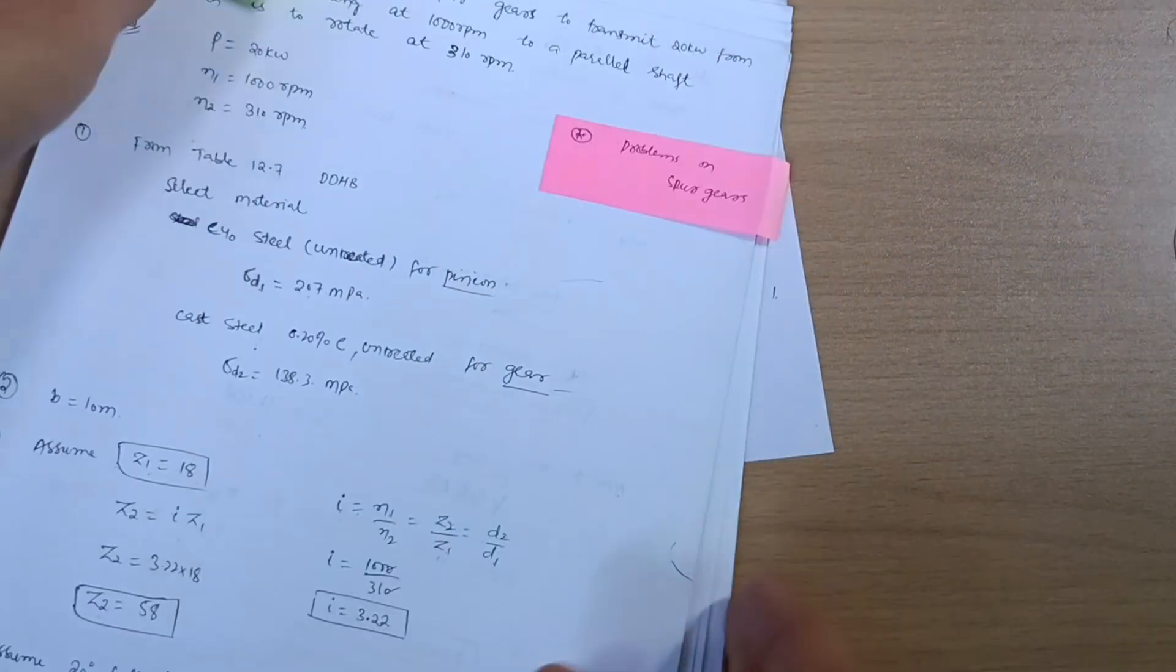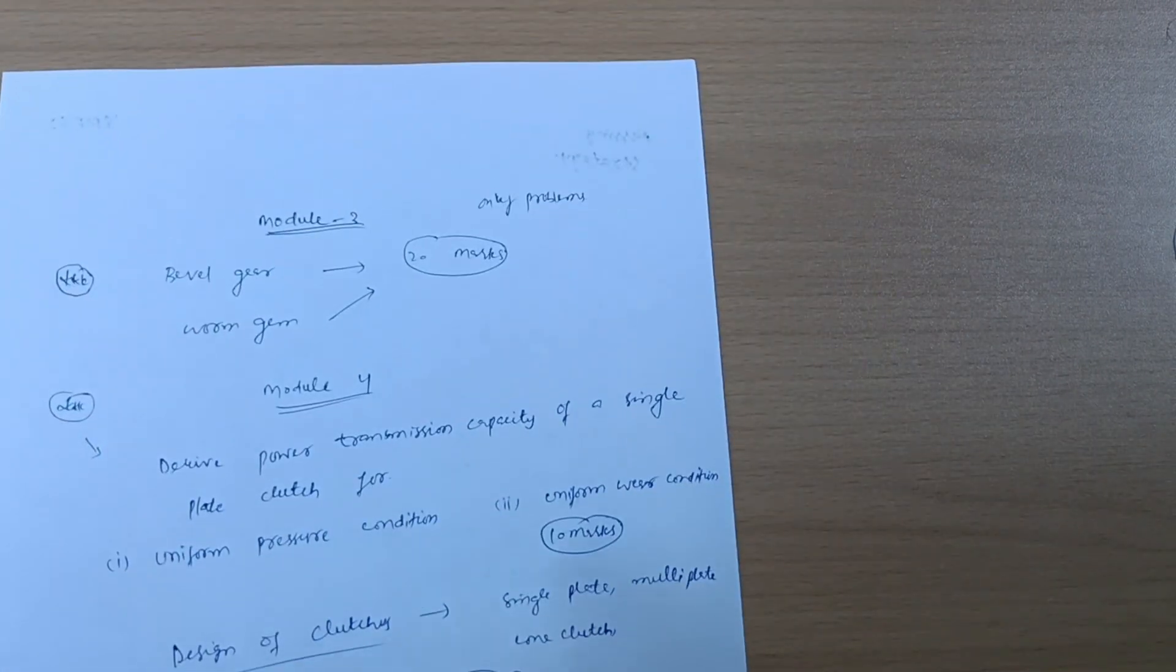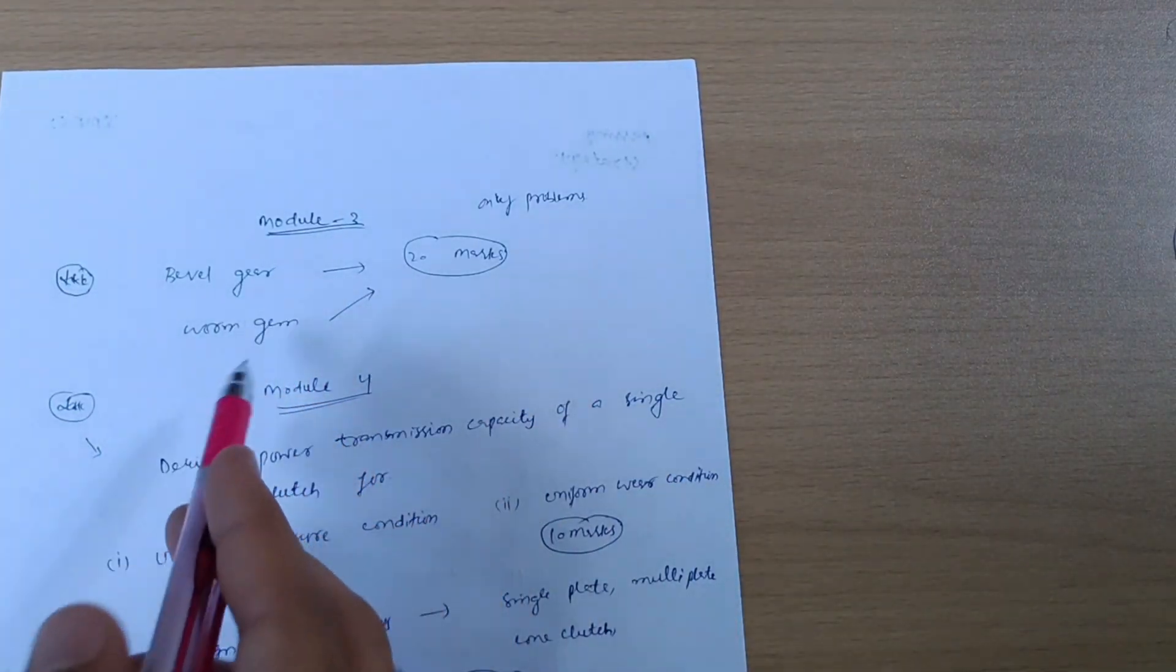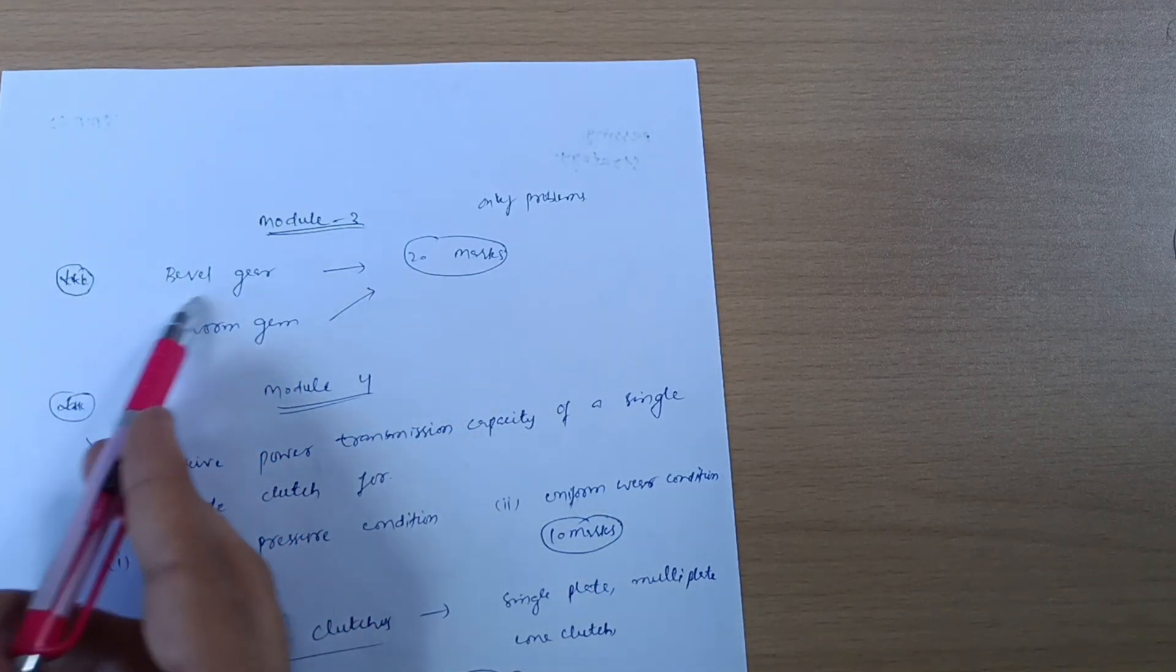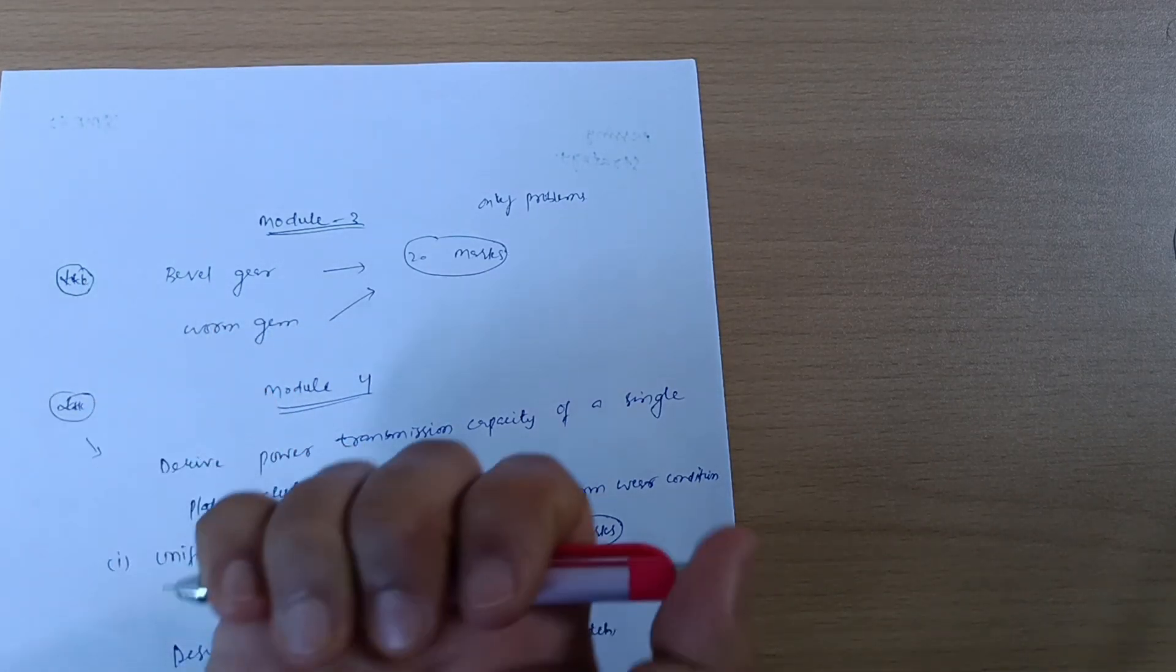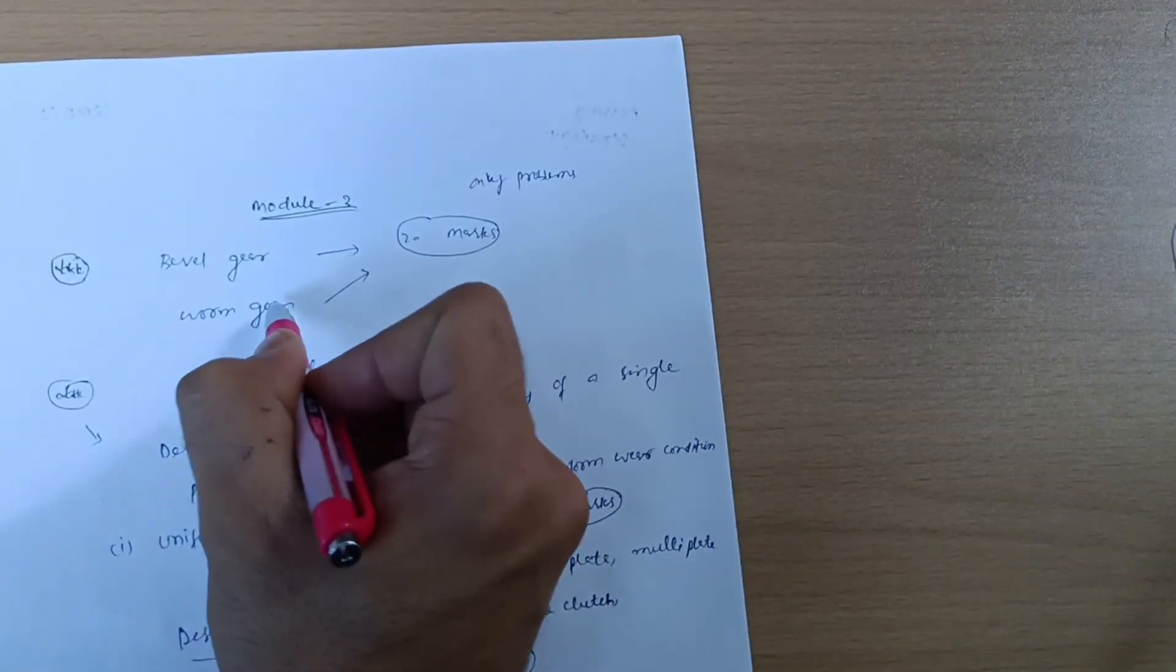Make sure you will go through these also. Next is Model 3 in which you have to go through only problematic part, no more theory. It is your choice: you choose bevel gear or worm gear. When I was in sixth sem, I chose the bevel gears which were easy for me.